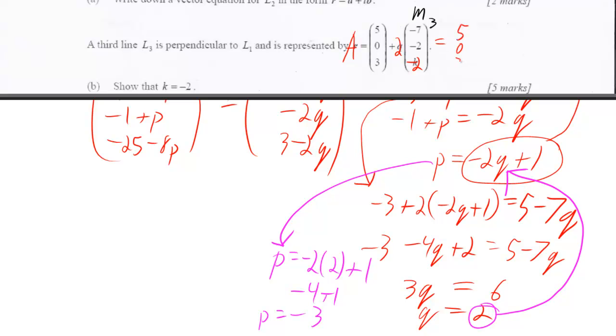It's going to be 5, 0, 3. And now let's multiply 2 through, and we'll get negative 14, negative 4, negative 4. And then simplifying, 5 minus 14, 0 minus 4, 3 minus 4, and I'm just going to write negative 1. So, final answer is negative 9, negative 4, negative 1. That's it.